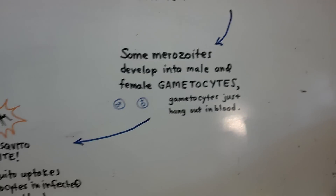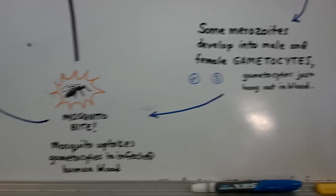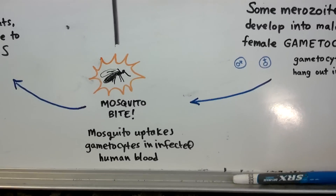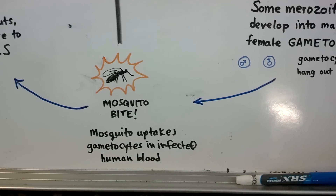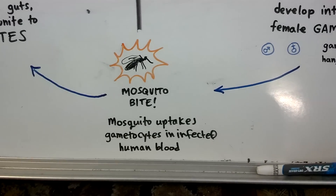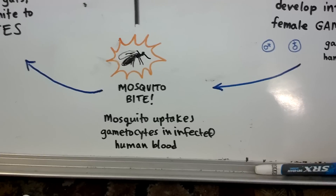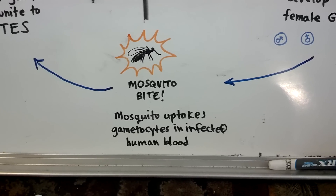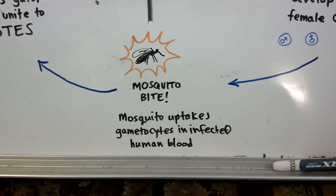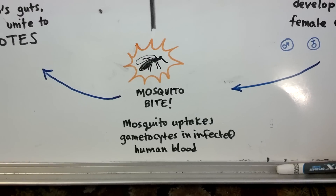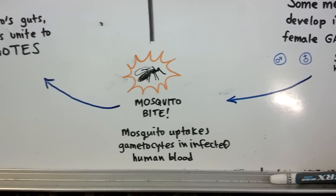What happens next? Another mosquito bite! The infected human is bitten by another mosquito who uptakes blood, and in this blood it's uptaking gametocytes as well because the blood is infected.